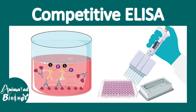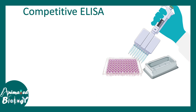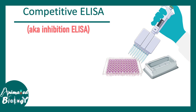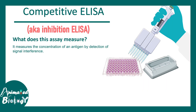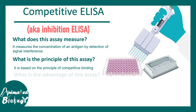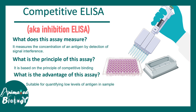In this video we'll talk about competitive ELISA, also known as inhibition ELISA, which is an assay to detect antigen in a quantitative fashion. This assay measures the concentration of antigen by detection of signal interference. The principle is competitive binding, and the advantage of this assay is that it is extremely sensitive and adequate for low levels of antigen in a patient sample.